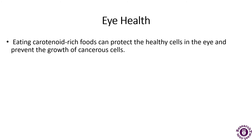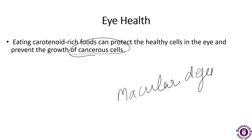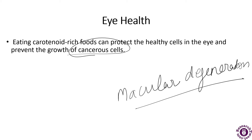Eating carotenoid-rich foods can protect healthy cells in the eyes and prevent the growth of cancerous cells. One of the leading causes of blindness is macular degeneration, or degeneration of the center of the retina. Long-term blue light exposure can cause this and negatively affect the delicate parts of the eye.